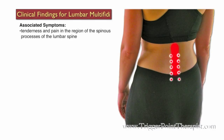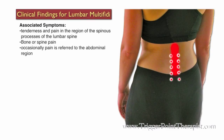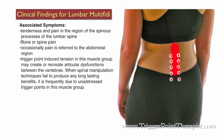Associated symptoms for trigger points in the Lumbar Multifidi group include tenderness and pain in the region of the spinous processes of the lumbar spine, bone or spine pain, and occasionally the pain is referred to the abdominal region. Trigger point-induced tension in this muscle group may create or recreate articular dysfunctions between the vertebrae.